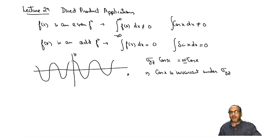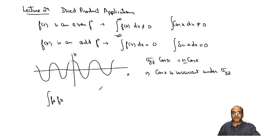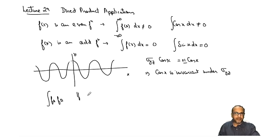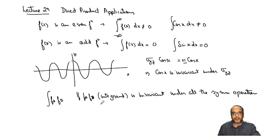Now consider an integral where we have two functions f_a and f_b. It is not always easy to determine whether their product is even or odd, but using symmetry and group theory we can determine whether the integral will be zero or non-zero. If the integrand f_a·f_b is invariant under all the symmetry operations a molecule has, then the integral I will not be equal to zero.